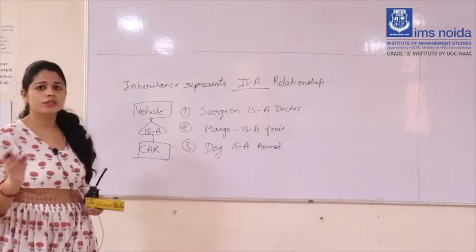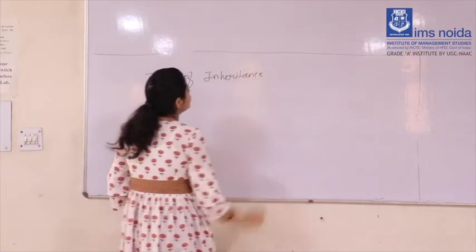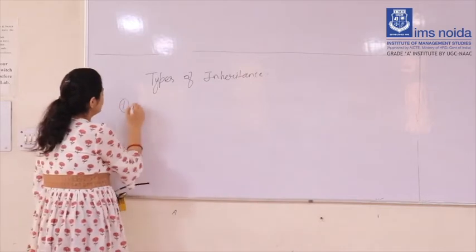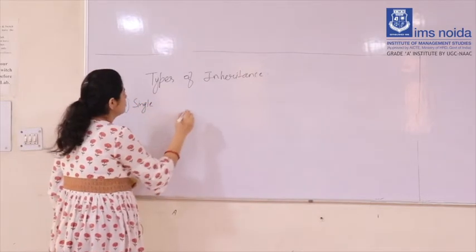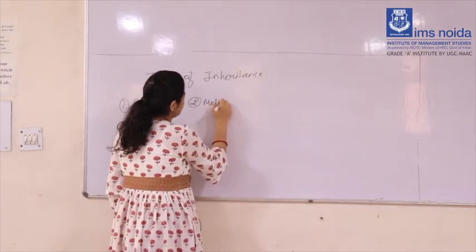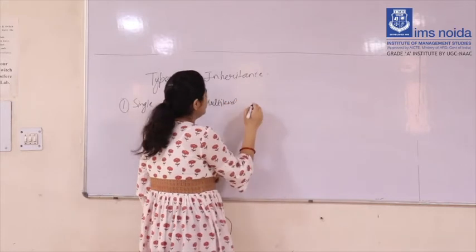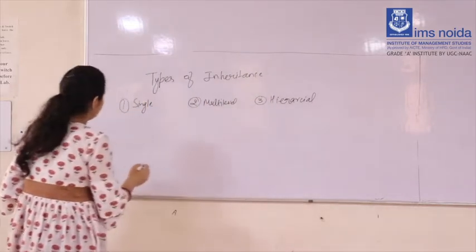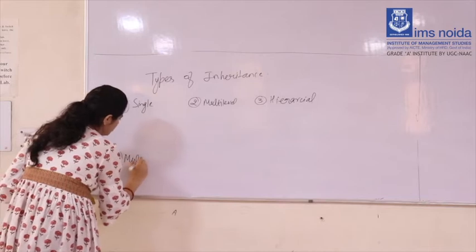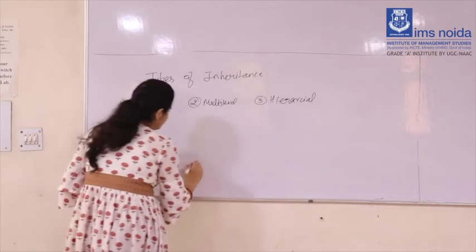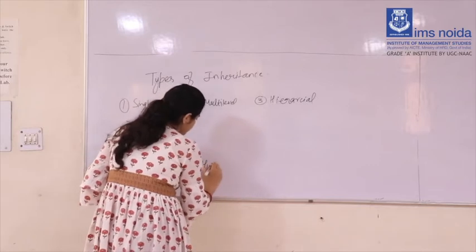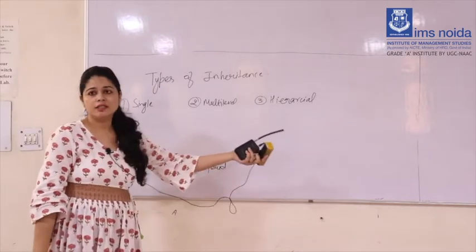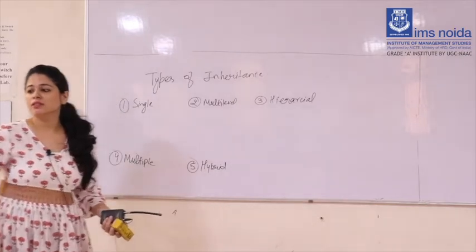Now we are going to discuss the types of inheritance in Java. Basically inheritance has five types: first is single inheritance, second is multi-level inheritance, third is hierarchical inheritance, fourth is multiple inheritance, and fifth is hybrid inheritance.